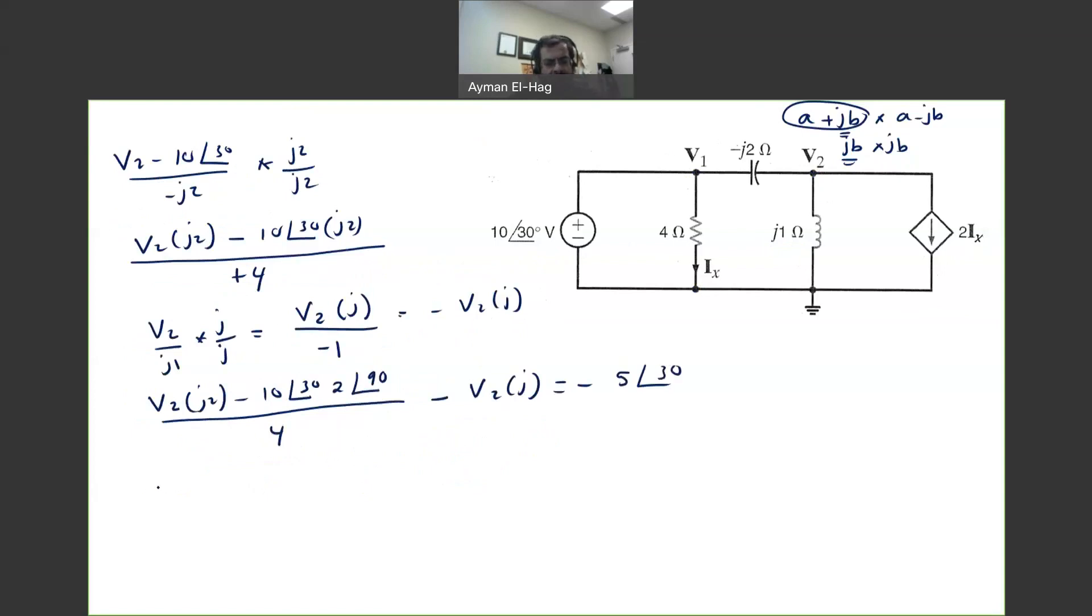Let's get rid of the 4, multiply the whole thing times 4. So we'll have V2 times j2 minus 20∠120° minus 4V2 times j is equal to -20∠30°. So we will have the V2 in one side, so we will have j2V2 minus 4jV2. So this becomes equal to -j2V2 equal to -20∠30° plus 20∠120°.